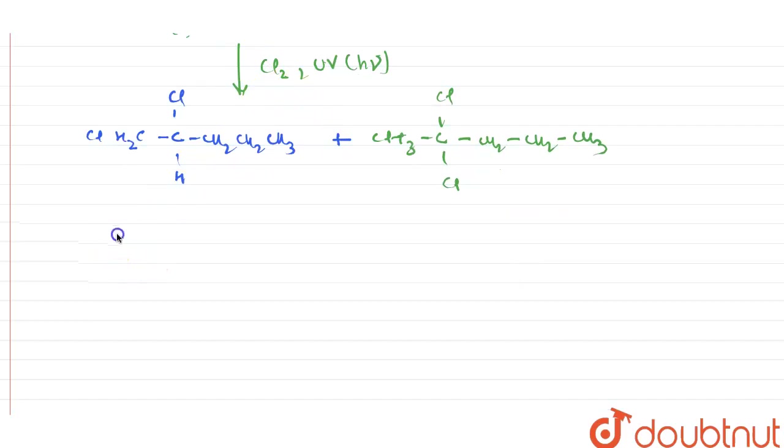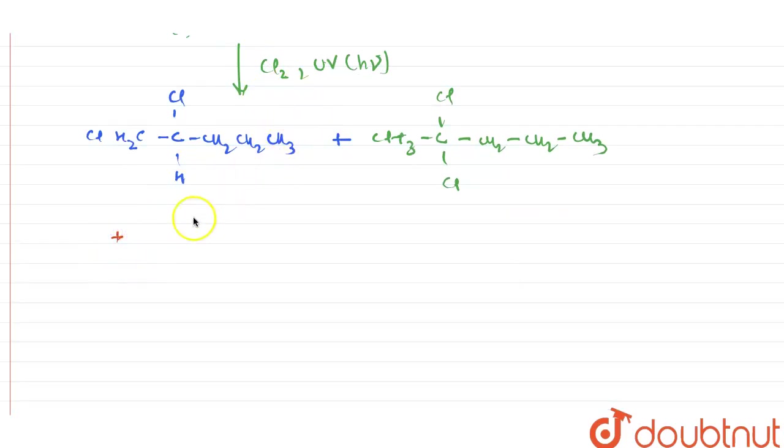The third product, this hydrogen can be replaced of the right side methyl group. Therefore, the product will be CH3, C-Cl, H, CH2, CH2, and CH2-Cl. This is the third product.